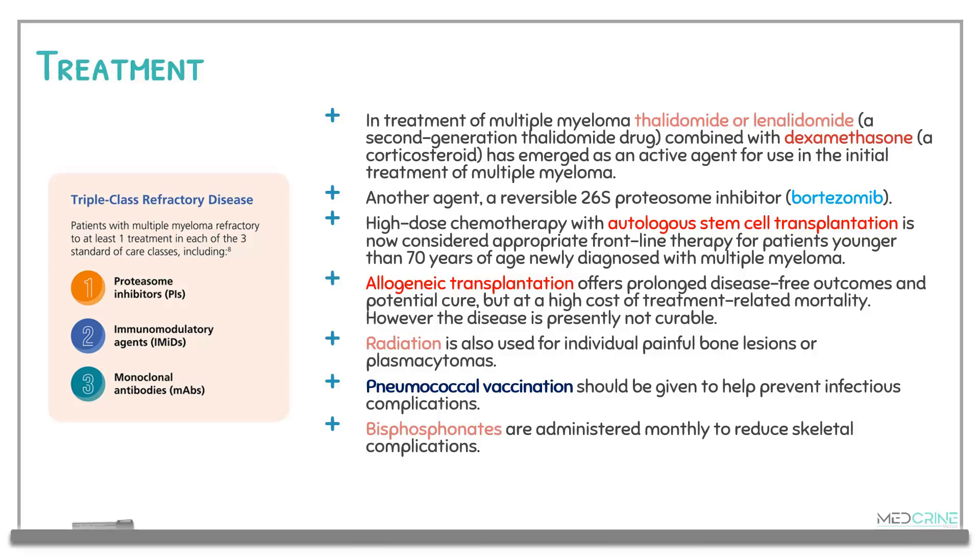Patients with painful bone lesions or plasmacytomas are treated with radiation. They are also encouraged to receive pneumococcal vaccination to protect against infectious complications from Streptococcus pneumoniae and Staphylococcus aureus. Bisphosphonates are administered monthly to reduce skeletal complications, and monoclonal antibodies and immunomodulatory agents may also be used.